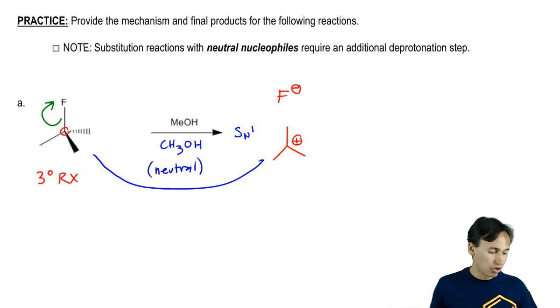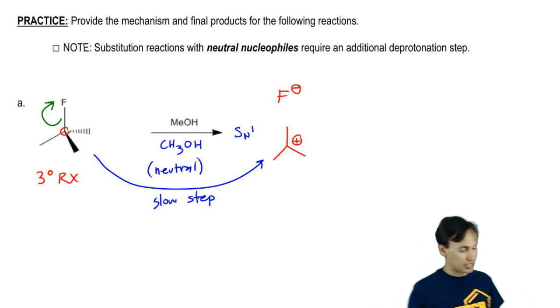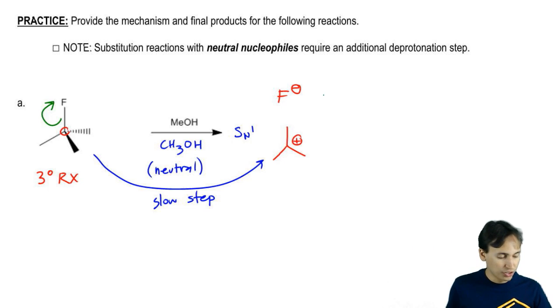This step, if you guys recall, was the slow step or the rate determining step because this is the hard one to do to make your carbocation so that you can later on react it with something. Now there's two things we could react it with. We could either react it with F negative or we could react it with the neutral nucleophile that's hanging out.